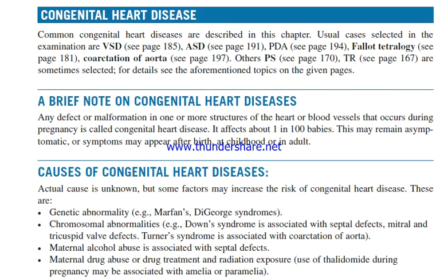Congenital heart disease. Common congenital heart diseases described in this chapter include VSD, ASD, PDA, tetralogy of Fallot, and coarctation of aorta. Others such as pulmonary stenosis and tricuspid regurgitation are sometimes selected. Any defect or malformation in one or more structures of the heart or blood vessels that occurs during pregnancy is called congenital heart disease. It affects about 1 in 100 babies. It may remain asymptomatic, or symptoms may appear after birth, in childhood, or in adults.